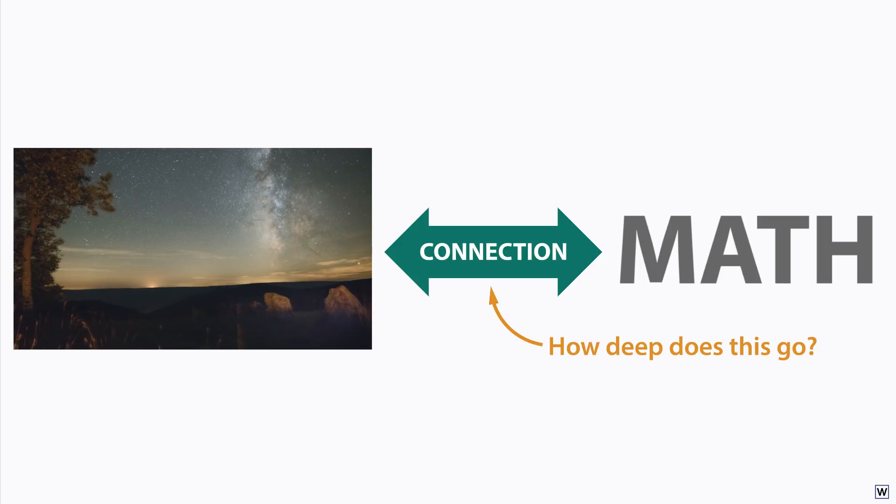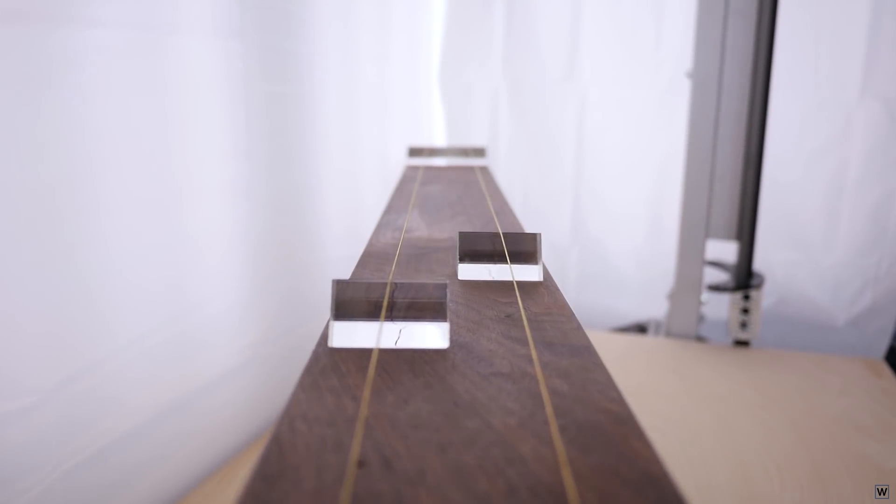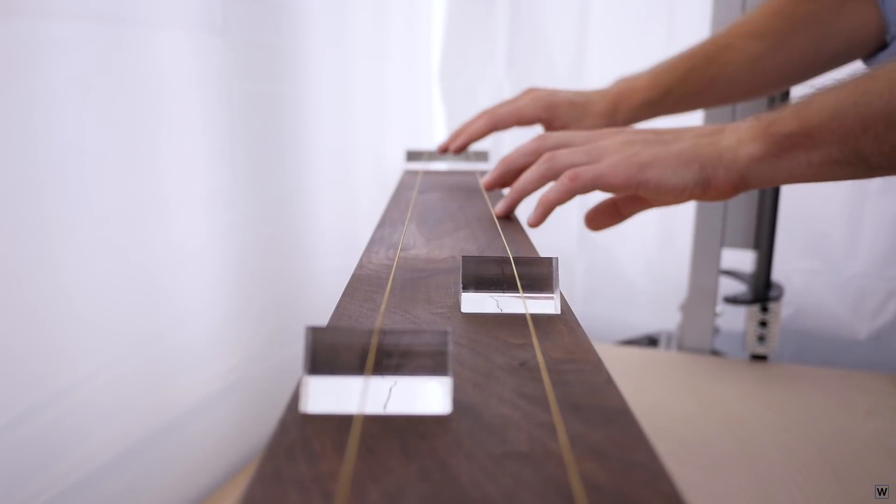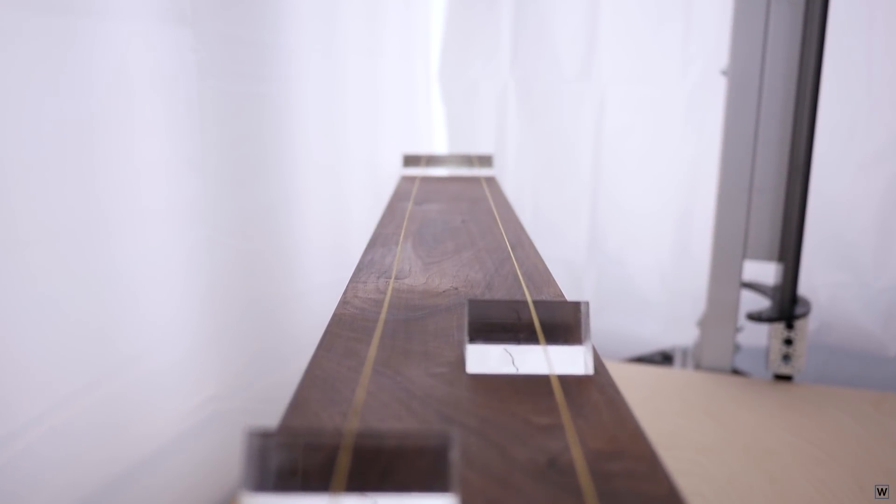If we can predict when two strings sound good together, what else can we predict? In the case of our vibrating strings, what actually makes our strings sound good or bad together? Can we use math to really understand what happens when a string vibrates?